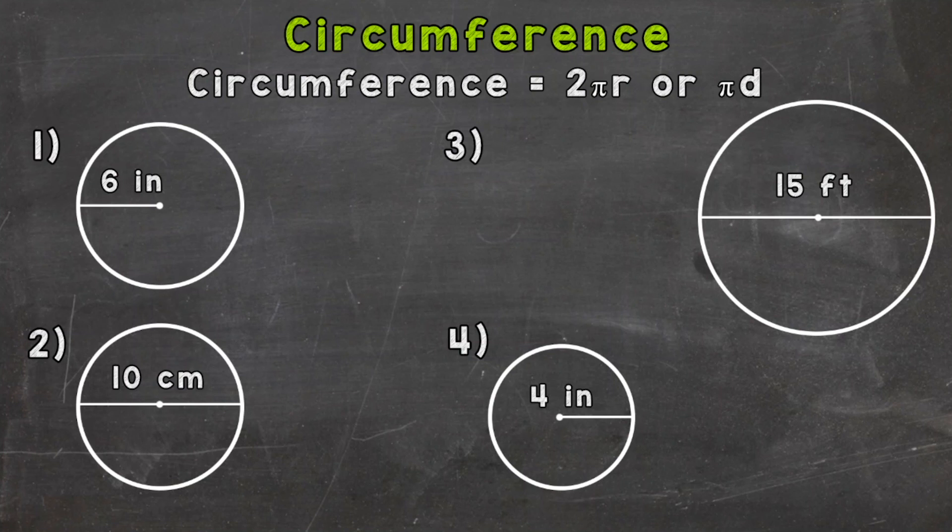As you can see on your screen, we have four problems. We're going to find the circumference for those four circles. Now I want to back up a second here to the formulas. We have this little symbol, that's the symbol for pi. Pi is the ratio of the circumference of a circle to its diameter. I'm just going to leave it at that. I'm not going to get into further detail about pi. There's great articles and websites and YouTube videos you can learn more about pi, but for now we're just going to focus on calculating circumference.